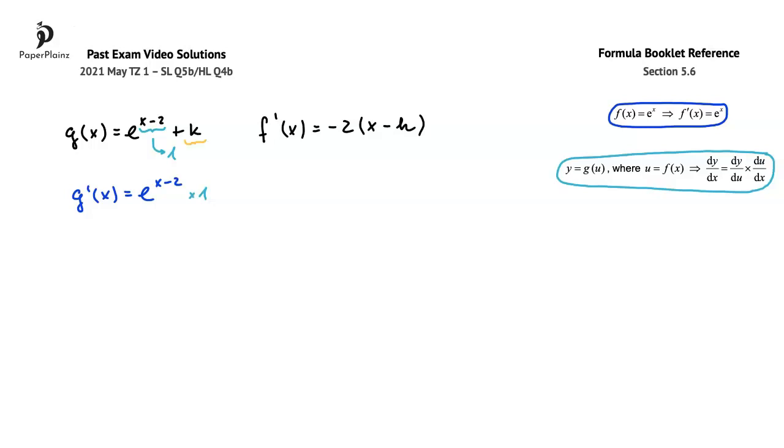Finally, since k is a constant, its derivative is 0, so I will add 0. Therefore, the derivative of g(x) is simply e to the power of x minus 2.